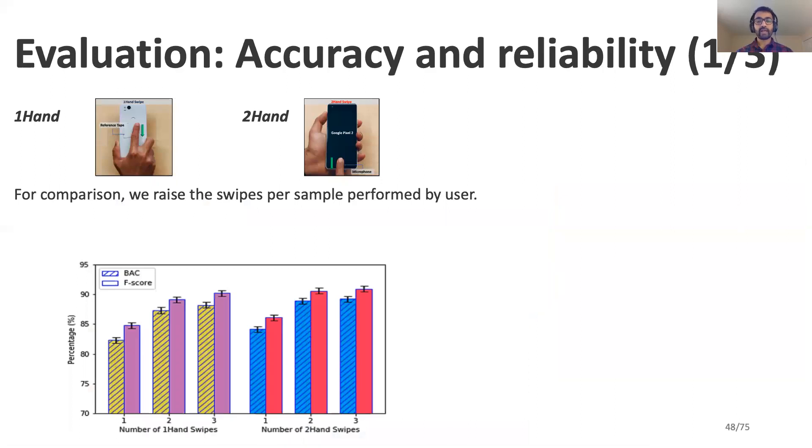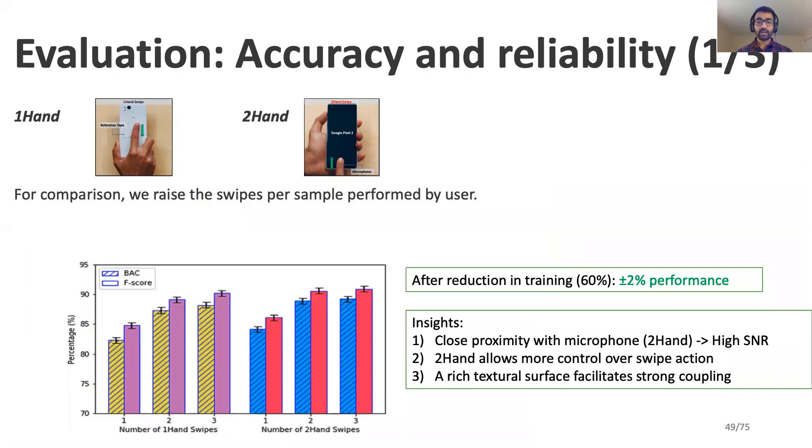We first evaluate the accuracy and reliability of our results. Our system achieves 92% accuracy, more specifically balanced accuracy and F-score for both one-hand and two-hand action types. It is important to note that our system performance only suffers by a 2% reduction even after reducing the training samples by 60%. Our study leads us to few interesting insights. For example, a closer proximity with the microphone which is present in two-hand action types lead to a high SNR. Two-hand swipes are also observed to be more controlled and likable by users. Finally, a rich texture surface also facilitates a strong coupling between human fingertips and the device texture.